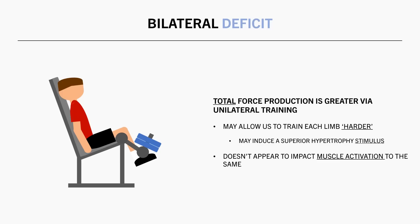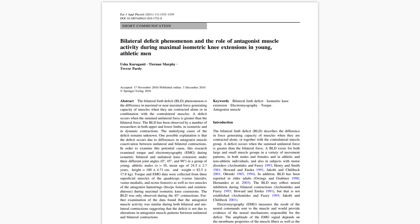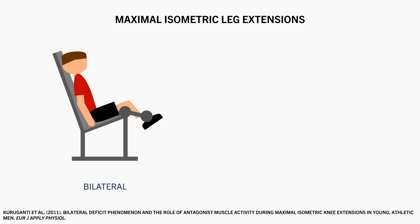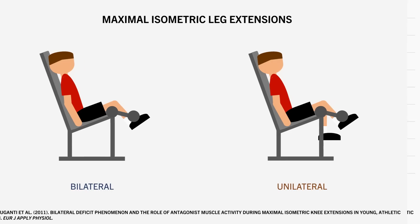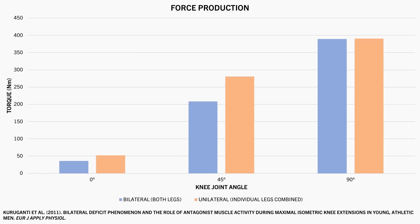In fact there is evidence that despite the bilateral deficit influencing force production, it may not actually impact muscle activation let alone long-term muscle growth. For example, this study compared the effects of bilateral versus unilateral leg extensions on force production and muscle activity. Subjects performed maximal isometric contractions on an isokinetic leg extension machine. In other words they pushed as hard as they could against an immovable leg extension machine. This was performed with both legs together and with each individual leg separately and at various different knee angles.